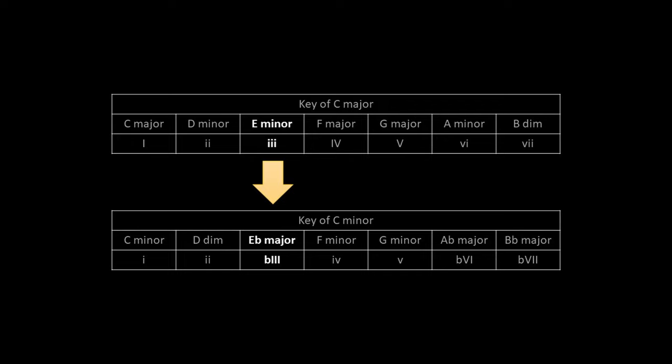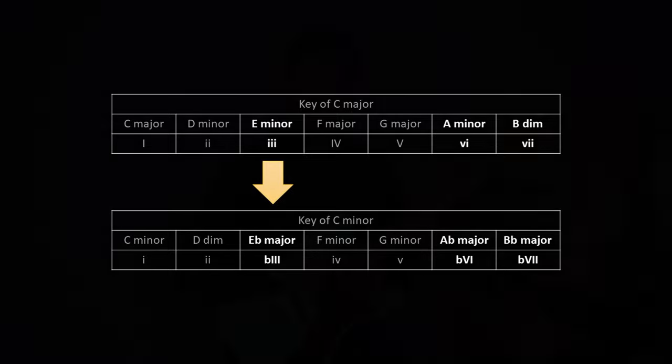In the key of C major, we have an E. In the key of C minor, we have an E flat major chord there. And the same goes as well for the flat major 6 and the flat major 7 — they've all been lowered one semitone.